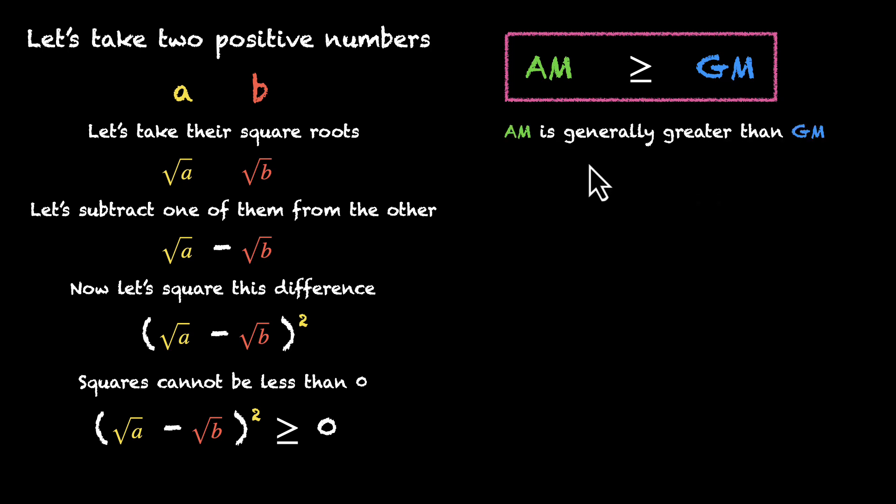Generally, AM is greater than GM. We looked at an example in this video before. But the question is, when are they equal? The answer is on the screen. Can you spot it? Well, they're equal when this is not an inequality, when this is exactly equal to zero.